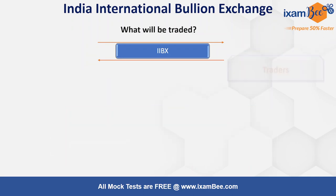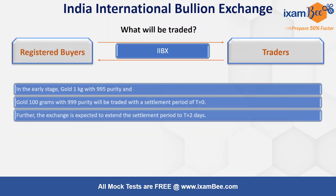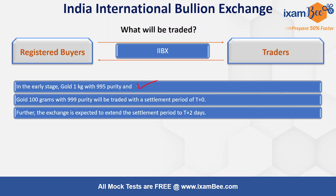What will be traded on India International Bullion Exchange? As of now, only gold bar of 1 kg with 995 purity. 995 purity means 24 carat is 100% pure; 99.5% purity gives you the gold bar — that is the first product. The second product is 100 grams of gold with 999 purity, with settlement of T+0. Beyond gold, silver is in the pipeline as the next product. In the future, denominations may change — like 500 grams or 700 grams — but that depends on time.